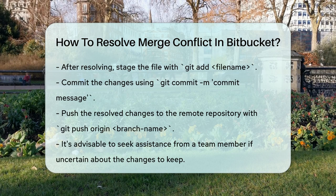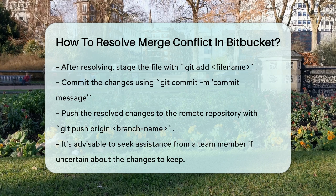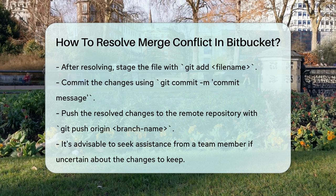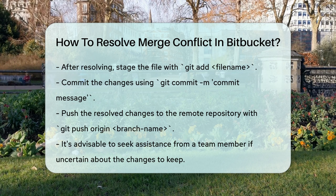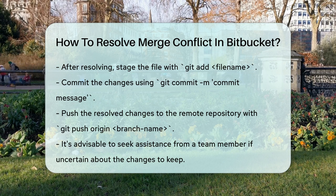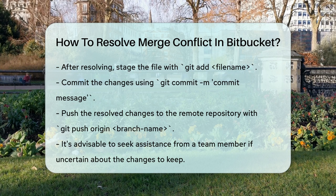This will update the remote branch and resolve the merge conflict, allowing you to proceed with your pull request or merge. By following these steps, you can easily resolve merge conflicts in Bitbucket and keep your project moving smoothly. Remember, it's always a good idea to ask for help from a team member if you're unsure about which changes to keep or discard.